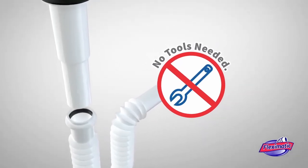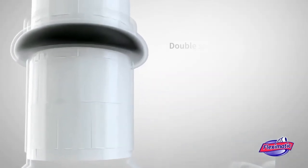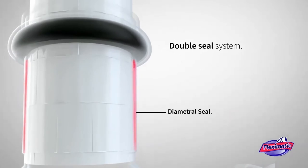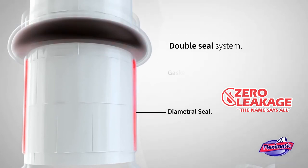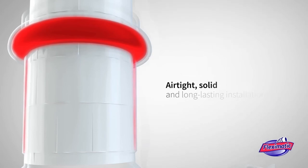Characterized by its ease of installation without tools, its unique design features a double seal system, diametral seal between walls that allows a perfect fit between the pipe and the corrugated pipe, and the gasket seal, made of engineered rubber, which guarantees an airtight, solid and long-lasting installation.